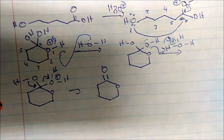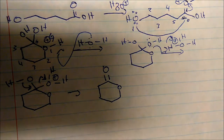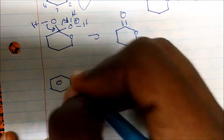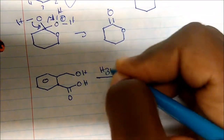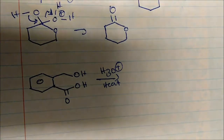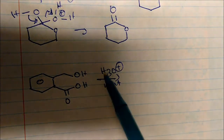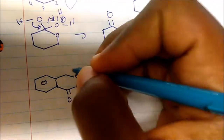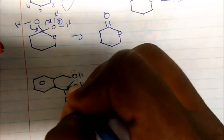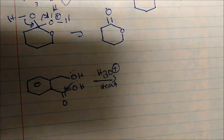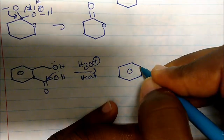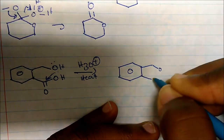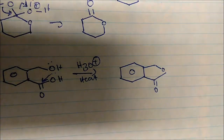That gives us our lactone — that's the simple mechanism. Now let's go straight to predicting products. If I throw this next molecule in solution with acid, remember that the alcohol further from the carbonyl is always more reactive as a nucleophile. The carbonyl gains protonation and this alcohol attacks, so we're going to form a five-membered ring with our carbonyl preserved — that's our five-membered lactone.